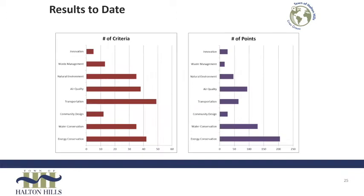This slide shows a couple of examples of the breakdown of what points people achieve within our existing standard. You can see they're quite heavily weighted towards energy conservation measures, water conservation measures that reduce the impact of transportation, and the natural environment. The number of points achieved through the green development standards is more highly weighted towards energy conservation. This is a result of the fact that we place greater emphasis on the energy conservation criteria within the green development standards — going beyond code in terms of your energy efficiency gets you the most points. We try to nudge people in that direction through weighting the points, reflecting the importance of energy conservation in addressing climate change.